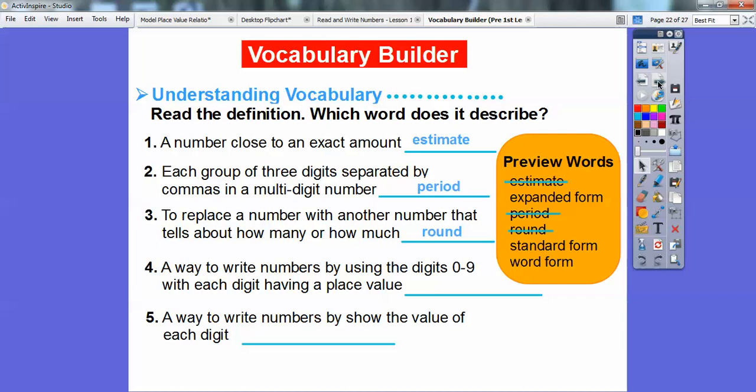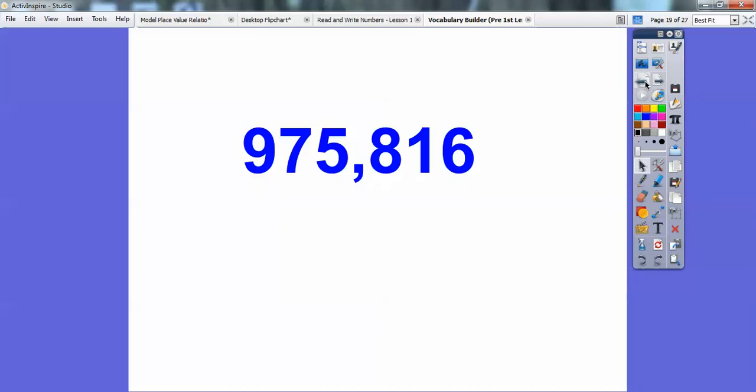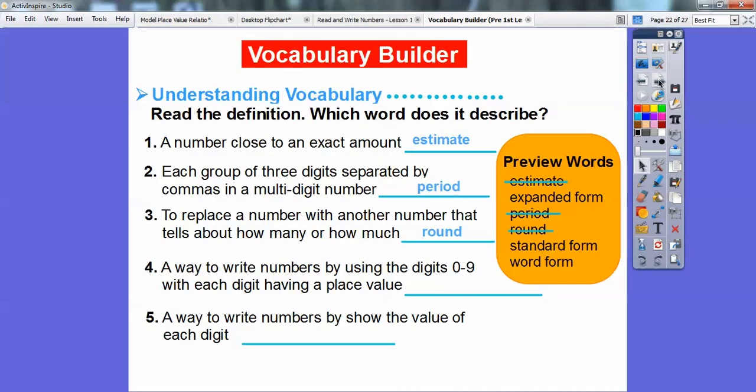A way to write numbers by using the digits 0 through 9 with each digit having a place value. Well, that is called the standard form. I like that number back there, this number right here, it's in standard form. So that is called standard form.